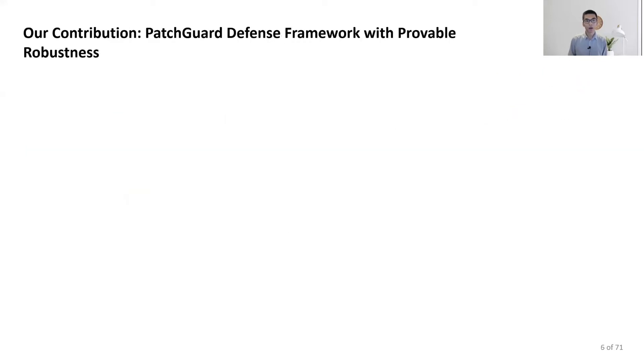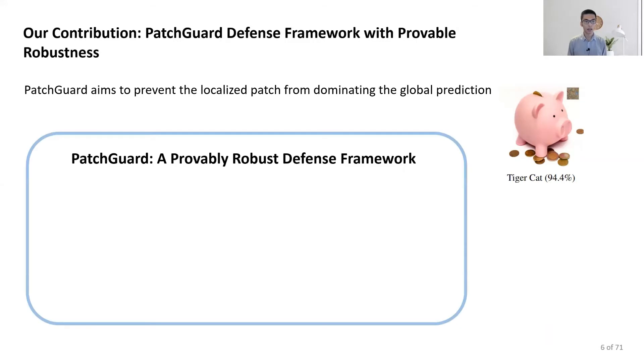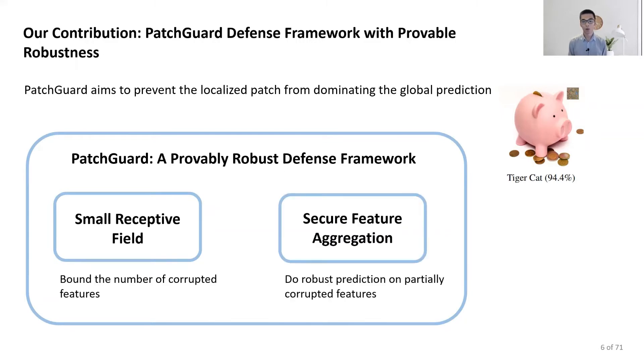In our paper, we propose PatchGuard as a general defense framework for provable robustness. The idea of PatchGuard is to prevent the localized patch from dominating the global prediction. It has two modules. The first is to use small receptive view to bound the number of corrupted features. Then, we do secure feature aggregation on the partially corrupted features for a robust prediction.